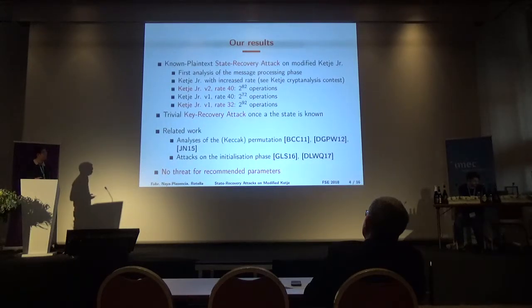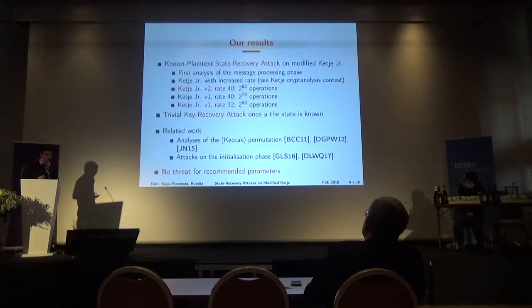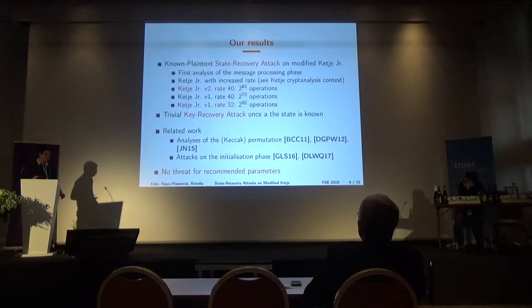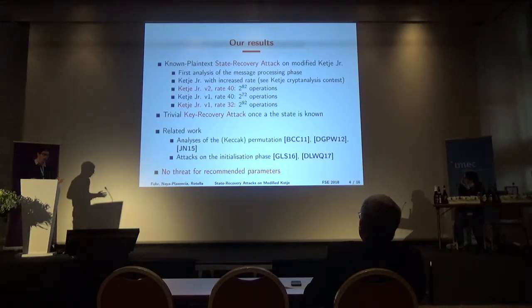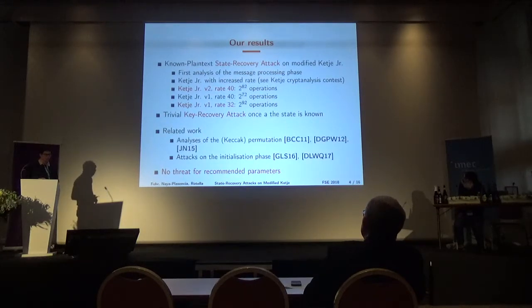We have the following results. For the first version of KETJER, we can attack with rates 32 or 40. For the second version, we need a rate of 40 to mount our attack. It is basically a state recovery attack: we recover the state during the message processing phase, and once the state is recovered, it is trivial to get the key by computing all operations in reverse order.